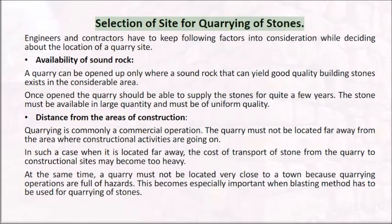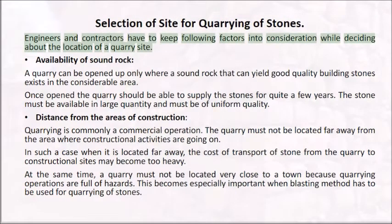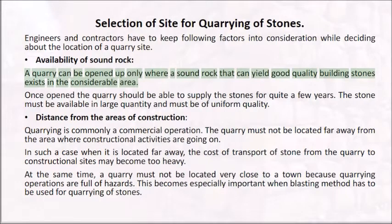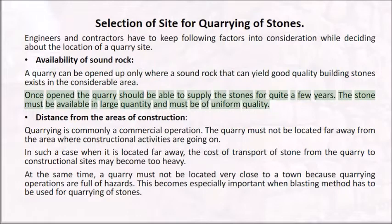Selection of site for quarrying of stones: engineers and contractors must keep following factors into consideration while deciding about the location of a quarry site. Availability of sound rock: a quarry can be opened up only where a sound rock that can yield good quality building stones exists in a considerable area. Once opened, the quarry should be able to supply the stones for quite a few years, and the stone must be available in large quantity and of uniform quality.